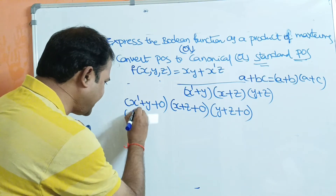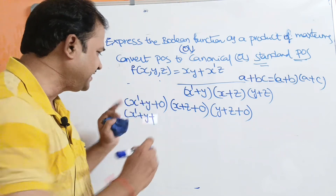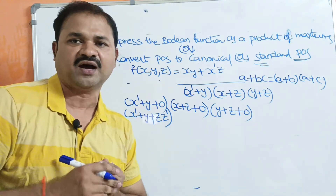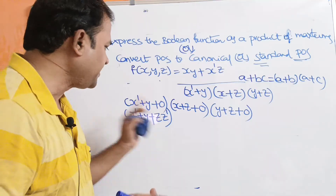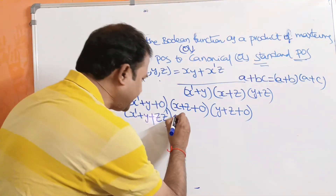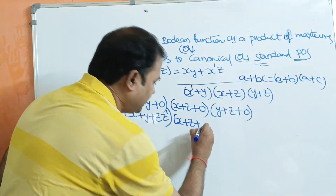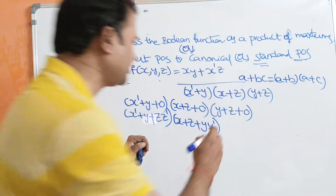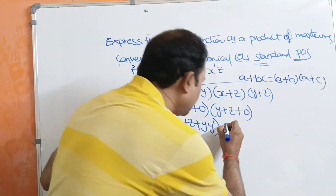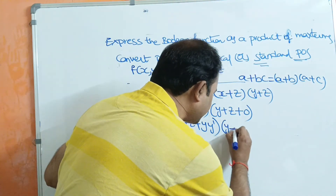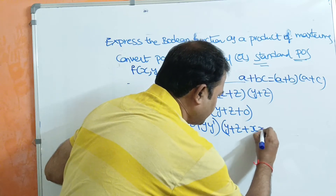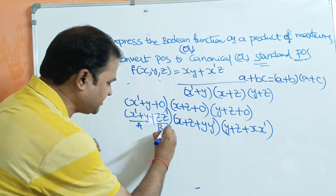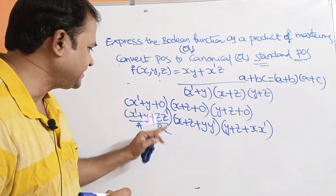In order to obtain z in the first term, we replace 0 with z·z', because a·a' = 0. So we replace 0 by the missing term and its complement. For the first term: x' + y + zz'. Applying the distributive law a + bc = (a+b)(a+c), with a = x'+y, bc = z·z', we get (x' + y + z)(x' + y + z').